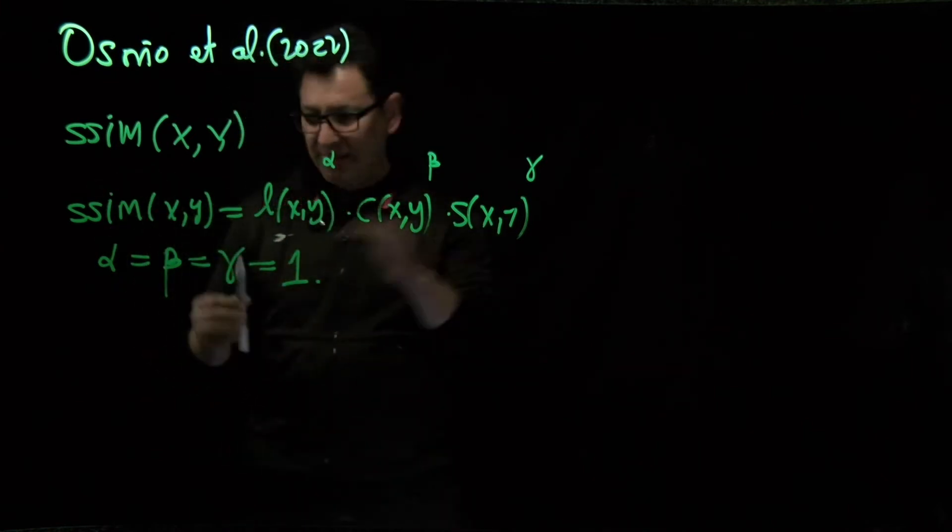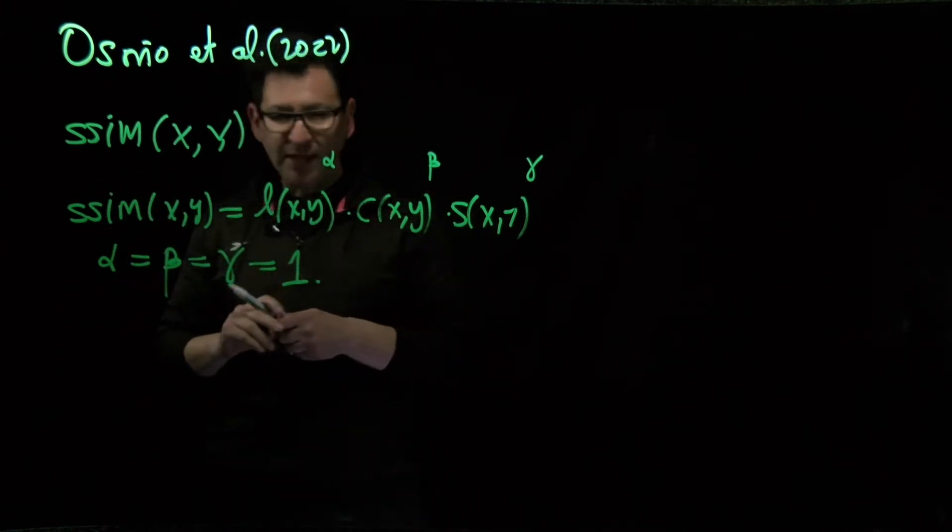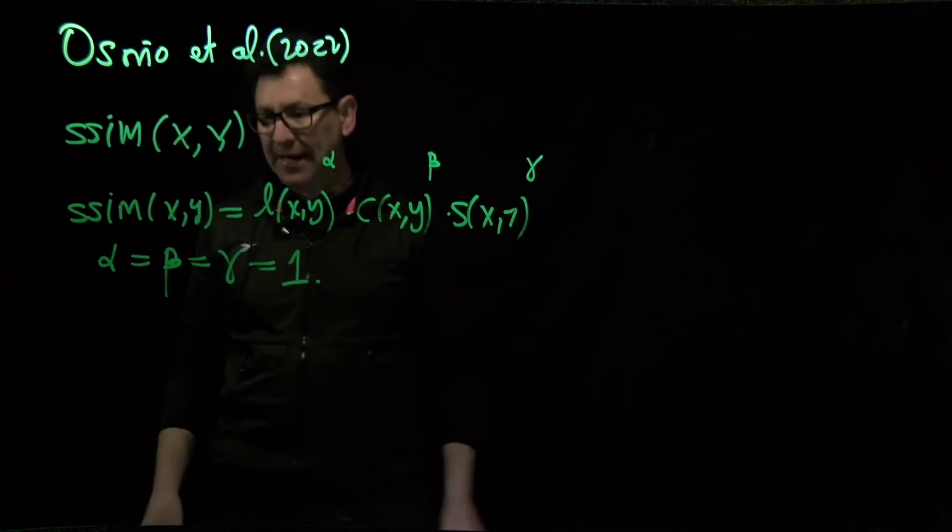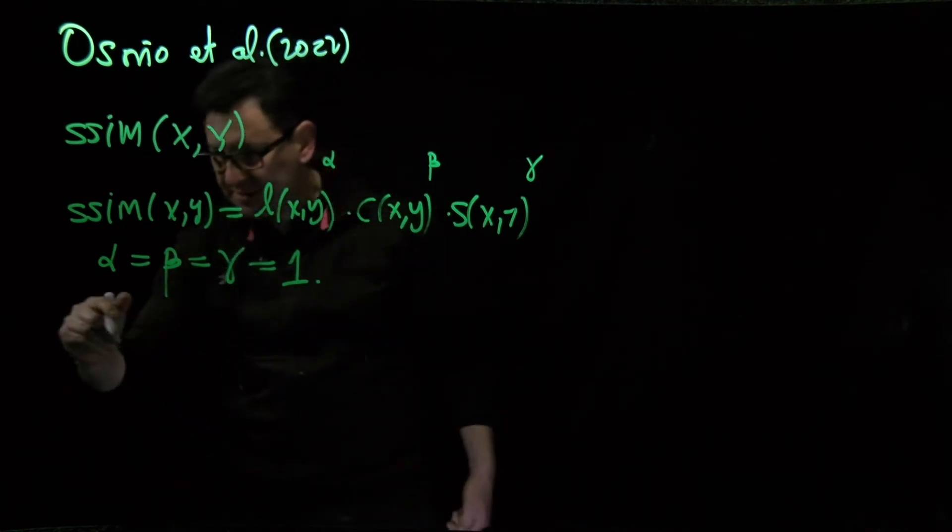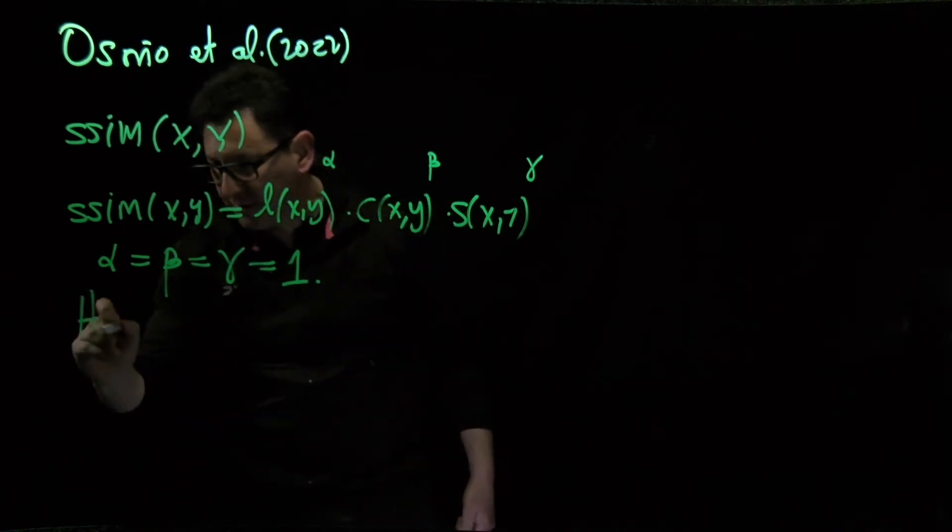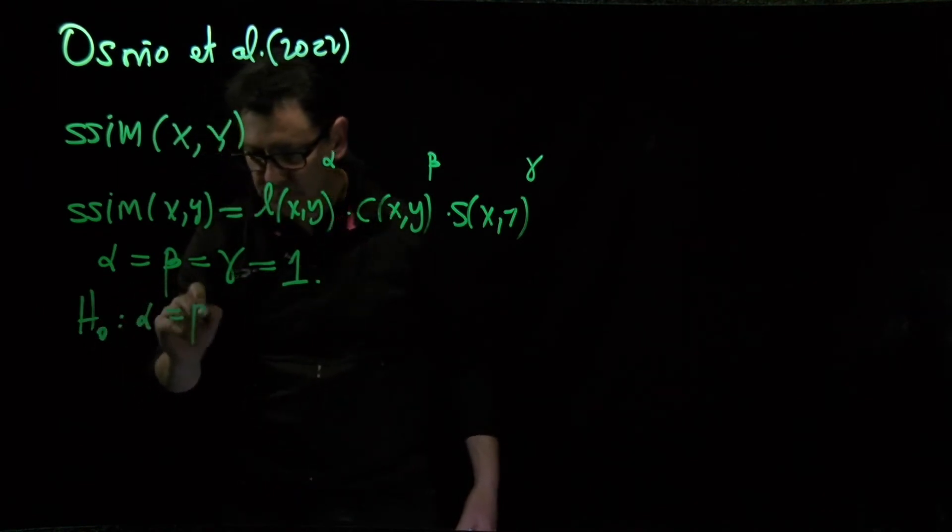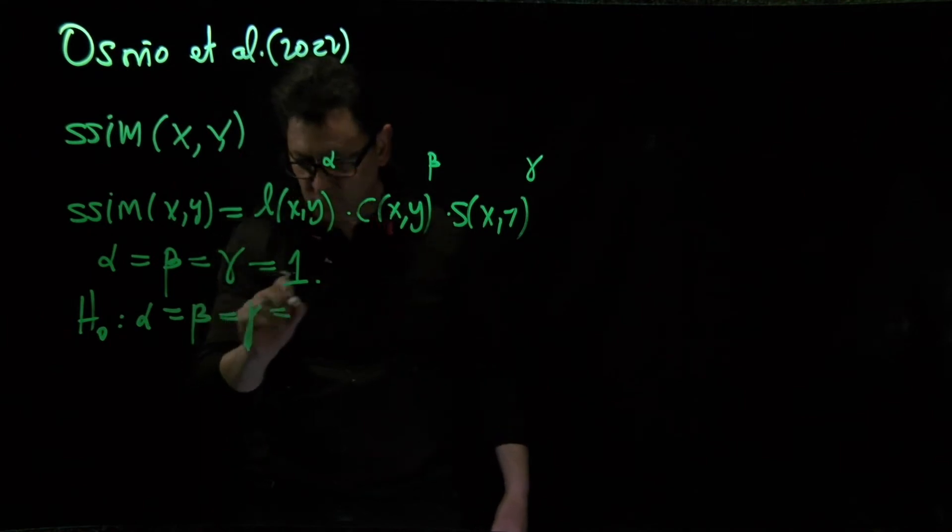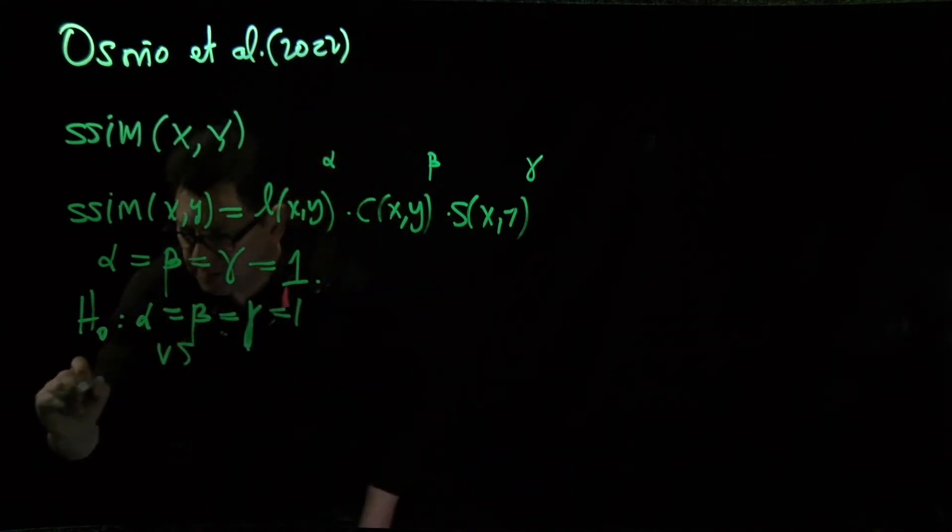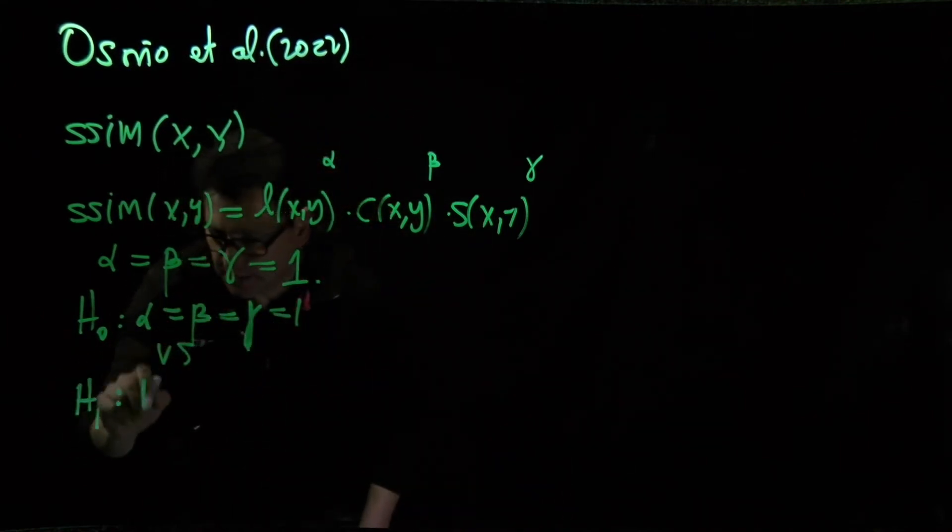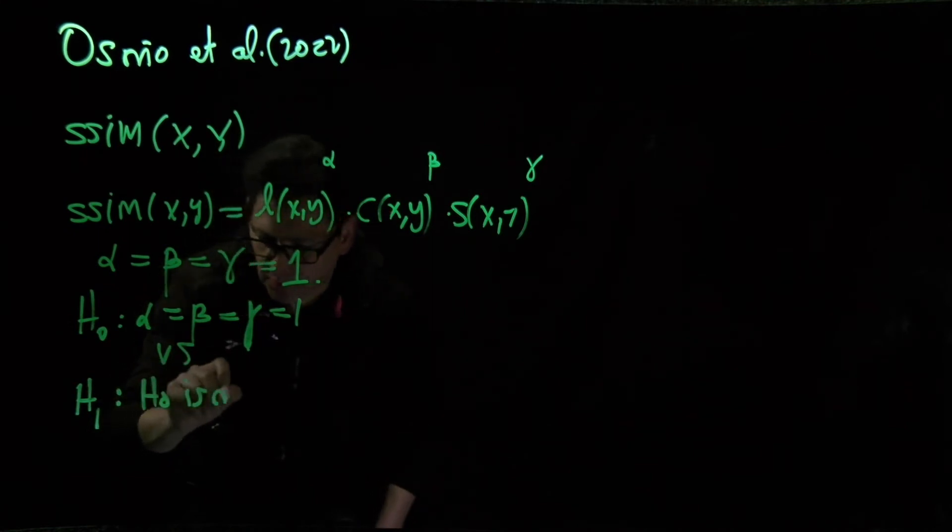We would like to transform this to a hypothesis testing problem, where the H0 hypothesis is alpha equals beta equals gamma equals one, versus H1 that H0 is not true.